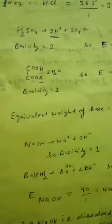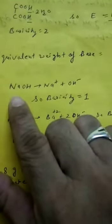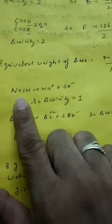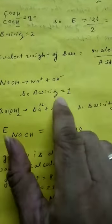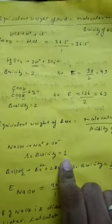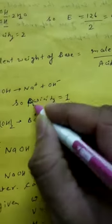For a base, the substance which releases OH⁻ ions in aqueous solution is called a base. For example, NaOH releases one OH⁻ ion. The number of OH⁻ ions released by a base is called its acidity. For NaOH, the acidity is 1. Similarly, for barium hydroxide, the acidity is 2.